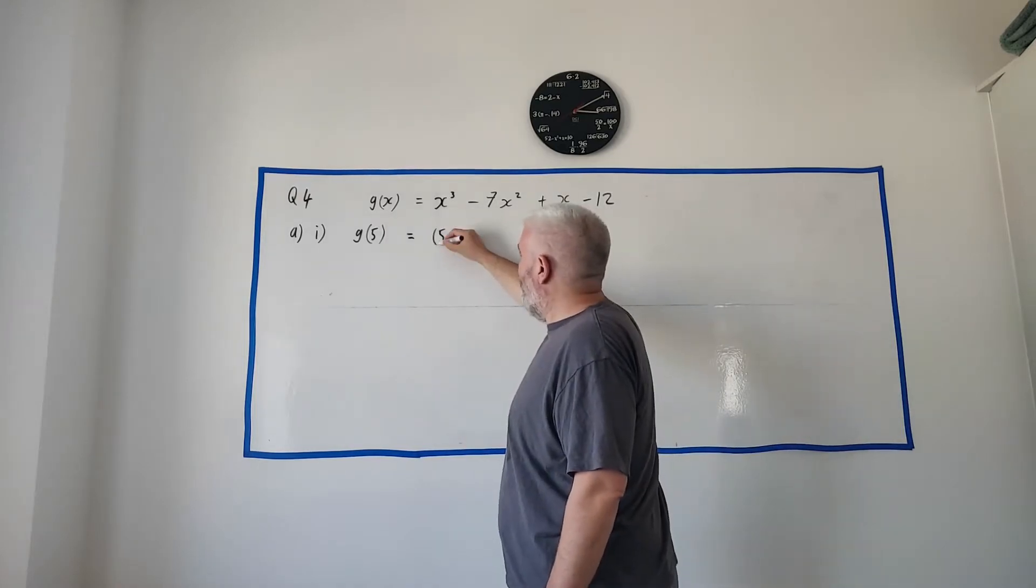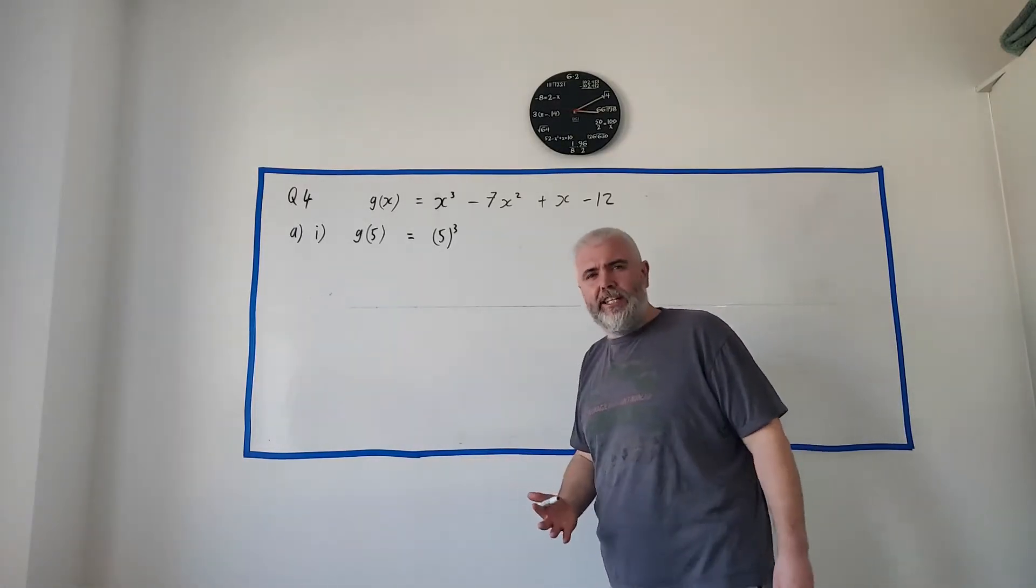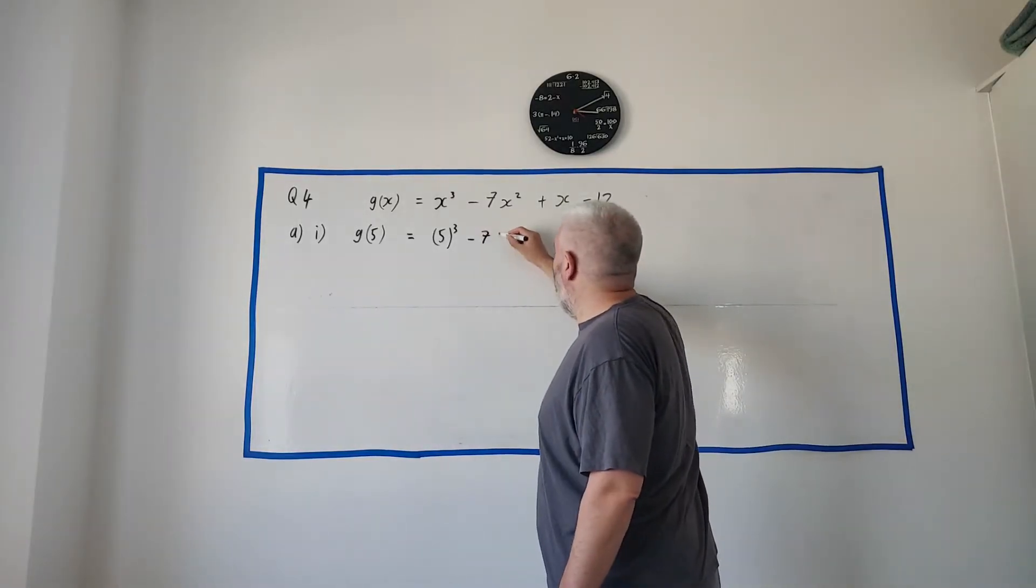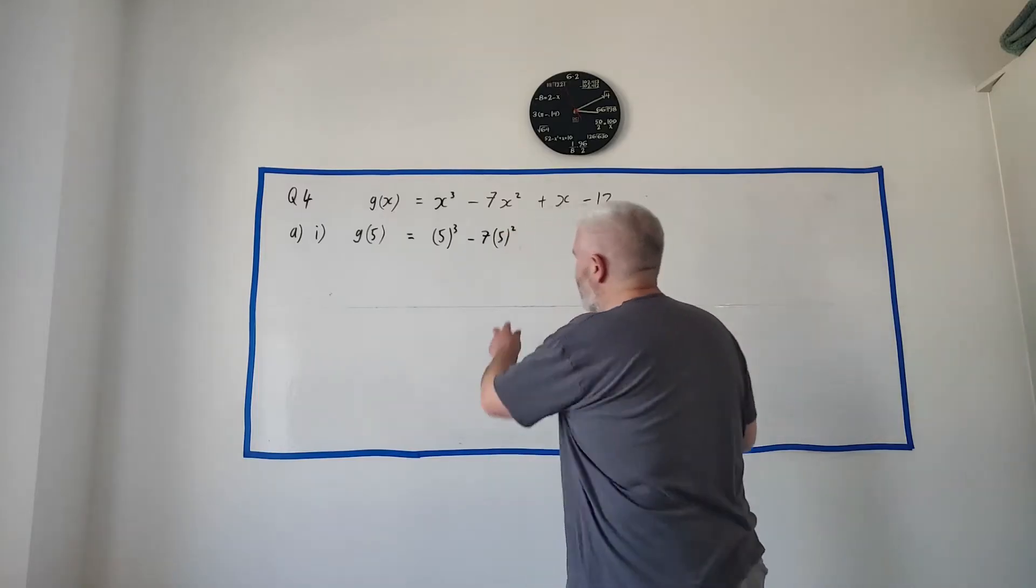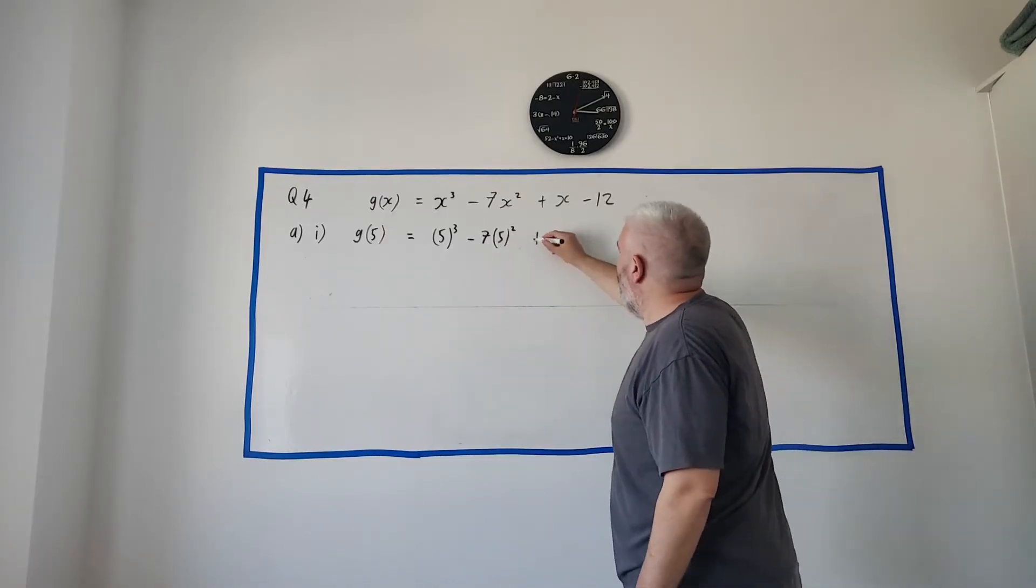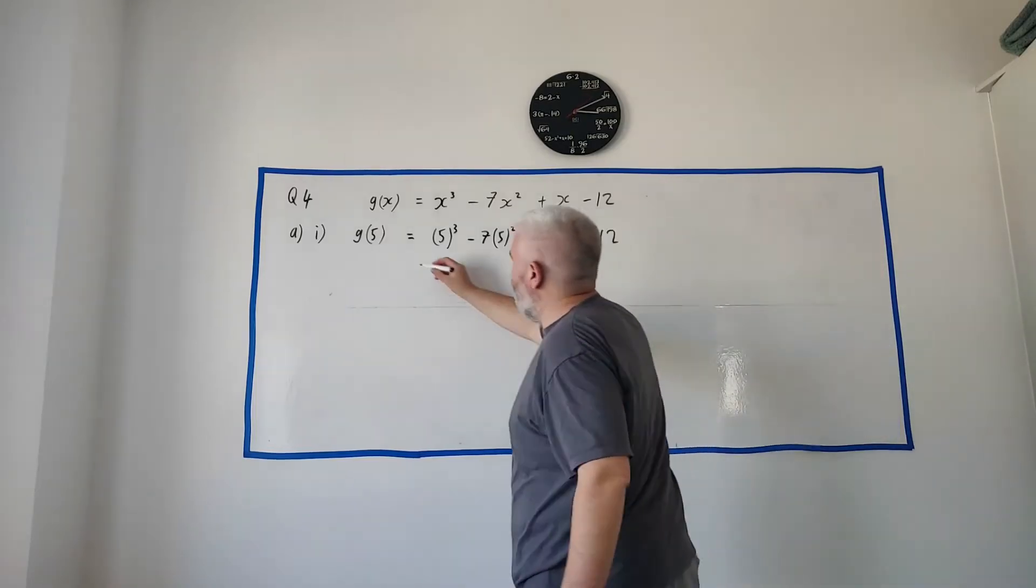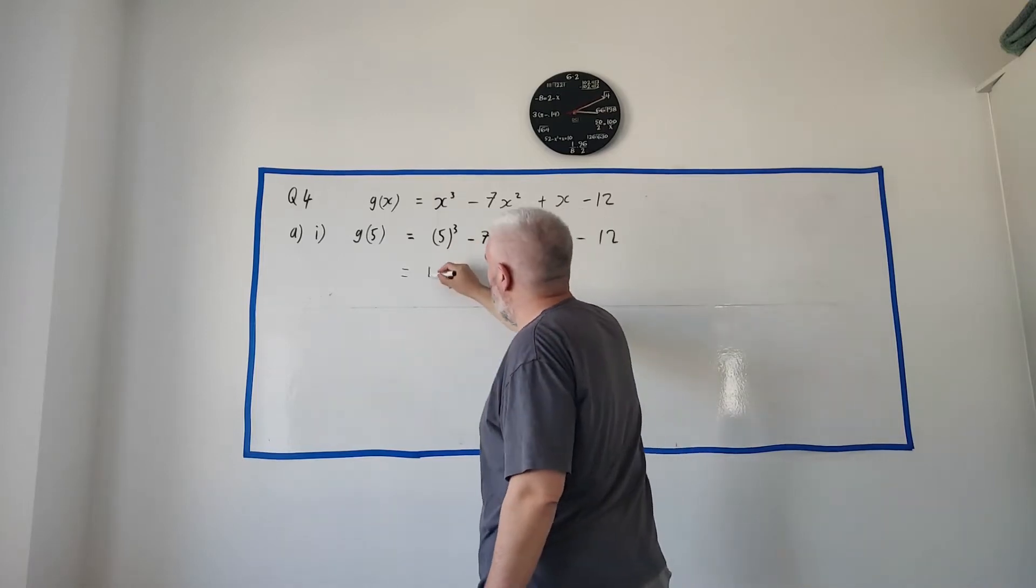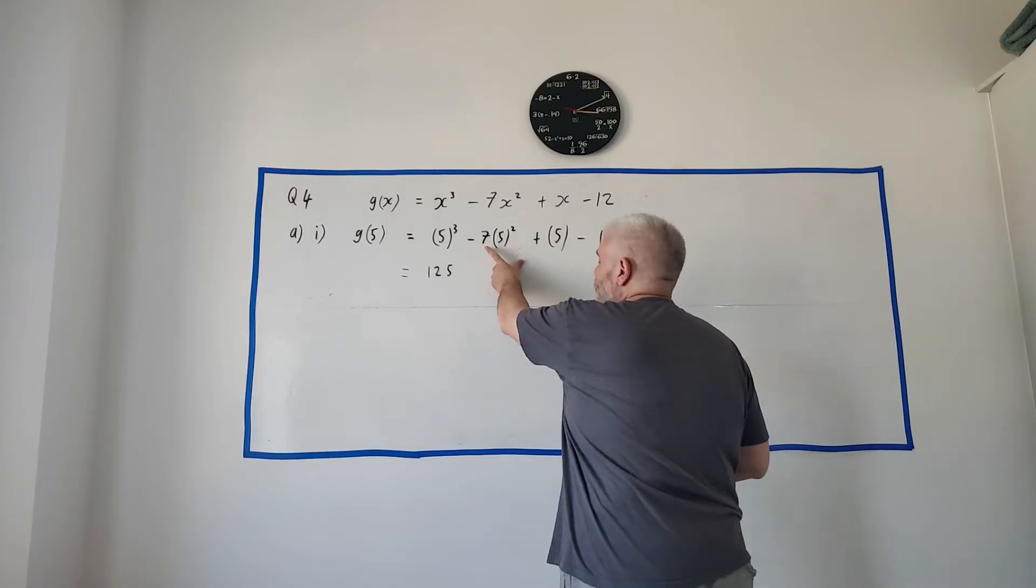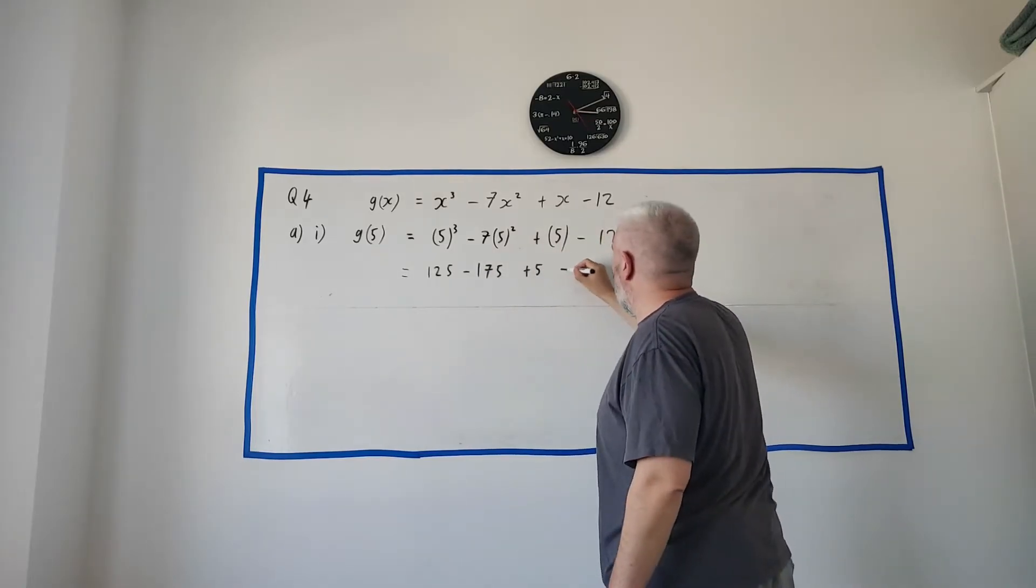See an x here? I'm going to put a 5 in. I always put brackets around things when I'm inputting them into equations. You don't always need it, but it's very helpful, especially when minuses are involved. So, minus 7, and again a 5 here. See, it's helpful, otherwise it would look like 75. But it's not. It's 7 multiplied by 5 squared. Plus a 5 goes in here. This bracket's not needed. And so on.